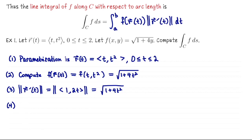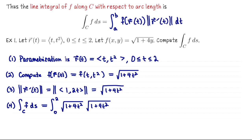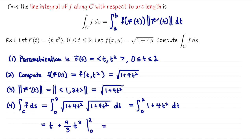The fourth step is to set up the integral and solve it. The integral of f along C with respect to arc length is the integral from 0 to 2 of f of r of t — the square root of 1 plus 4t squared — times the speed, which is also the square root of 1 plus 4t squared, dt. Simplifying, this becomes the integral from 0 to 2 of 1 plus 4t squared dt. Anti-differentiating gives t plus 4/3 t cubed. Plugging in 2 and subtracting the value at 0 gives 2 plus 4/3 times 8, or 38/3.